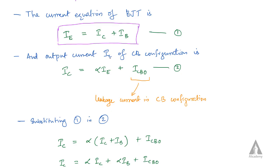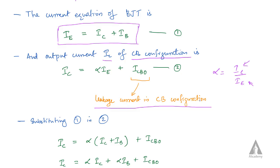The output current equation for common base configuration is IC equal to alpha times IE plus ICBO. Here alpha equals IC divided by IE, which is the current gain of the common base configuration. ICBO is the leakage current in the common base configuration — 'CB' stands for common base. This is equation number 2.